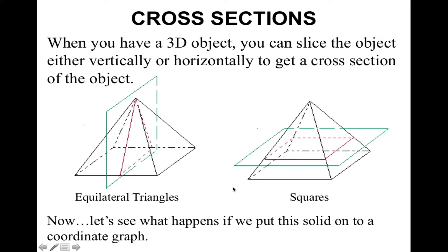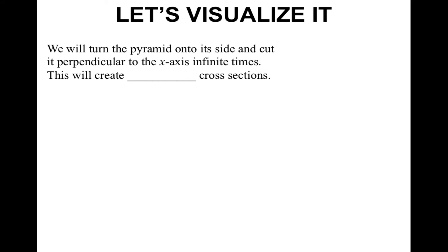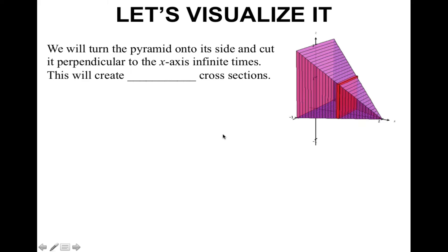Now let's see what happens if we put this solid onto a coordinate graph. Bear with me, I am trying to help you visualize this as best as possible, because these are not easy to draw by hand. We will turn the pyramid onto its side and cut it perpendicular to the x-axis infinite times. This will create blank types of cross-sections. Here is what this visually would look like. I took the pyramid and flipped it onto its side, and cut it infinitely a number of times vertically, perpendicular to the x-axis. You should notice that your cross-sections become squares.